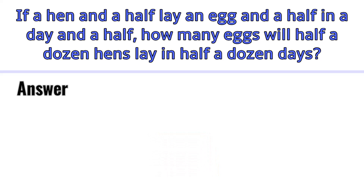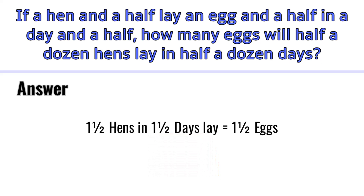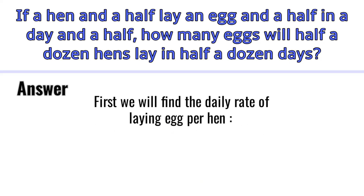Hope everyone has given their answer in the comment section. I will tell you the correct answer of this puzzle. So one and a half hens in one and a half days lay one and a half eggs. To solve this, first we have to find the daily rate of laying eggs per hen.